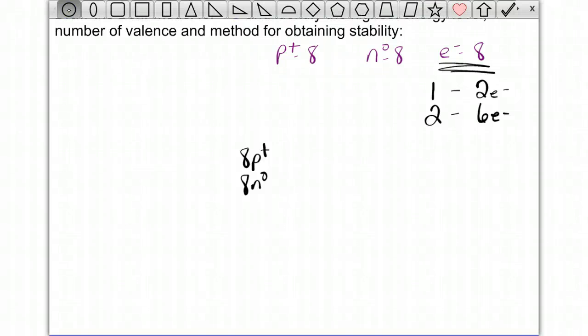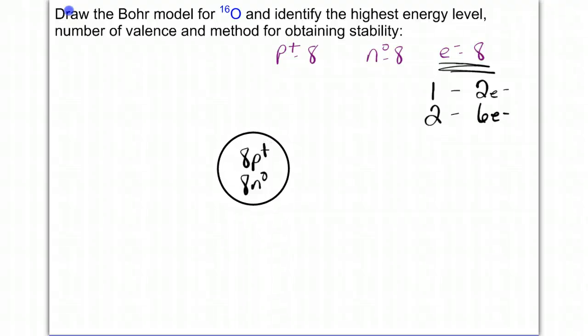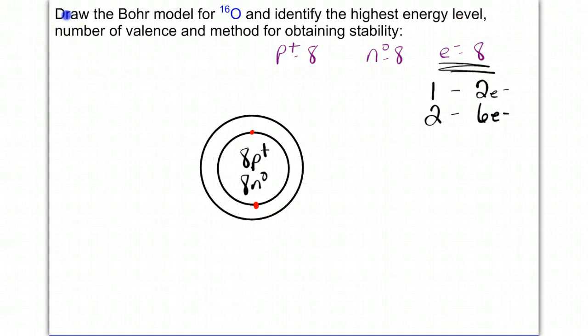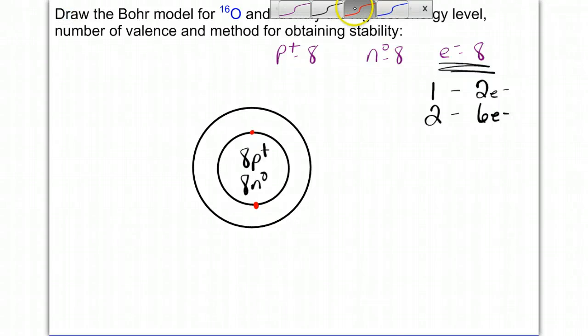We'll start with the first energy level, which is here, and that is going to contain 1, 2 electrons. I place the electrons on opposite ends from each other because electrons like to be as far away from each other as possible due to repulsion. My second energy level is going to be placed here. And I have 6 electrons on this one. So 1, 2, 3, 4, 5, 6. So there's my total of 8 electrons. Remember, each dot represents an electron.